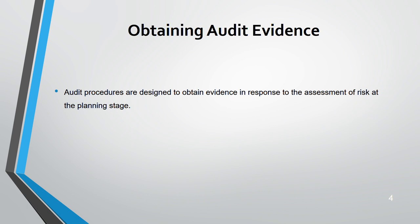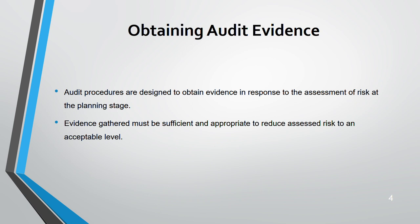If the assessment of risk is low, audit procedures can be simpler. The audit risk and business risk topics have been covered in the previous lecture, so you can go back and review. Then we respond by designing audit procedures. Evidence needs to be sufficient and appropriate — you will find this phrase often. The purpose is to reduce assessed risk to an acceptable level. When planning the audit, you first assess risk, then design audit procedures to collect evidence.